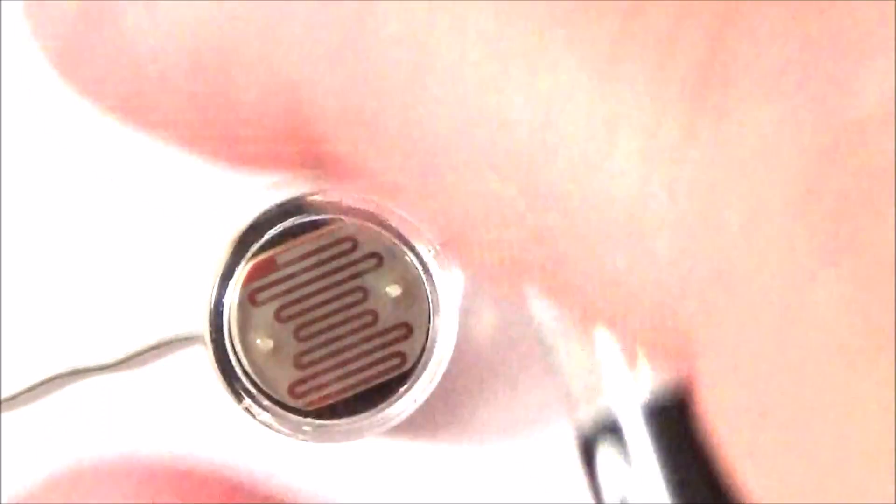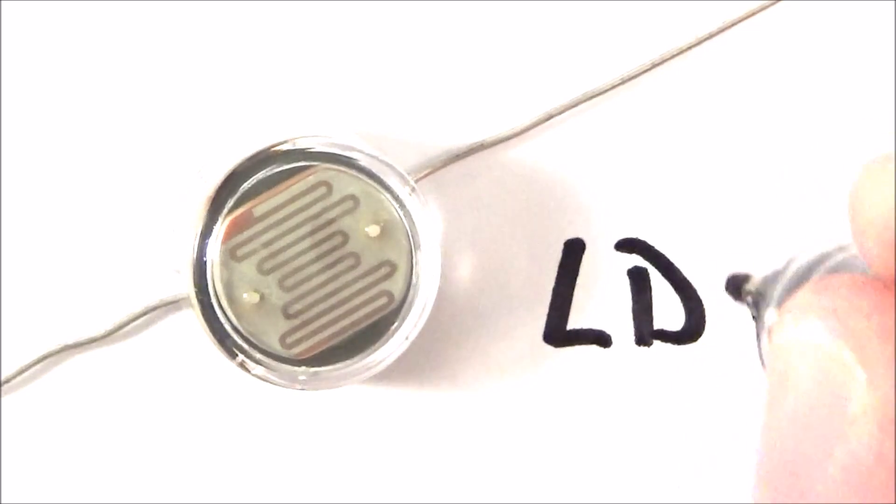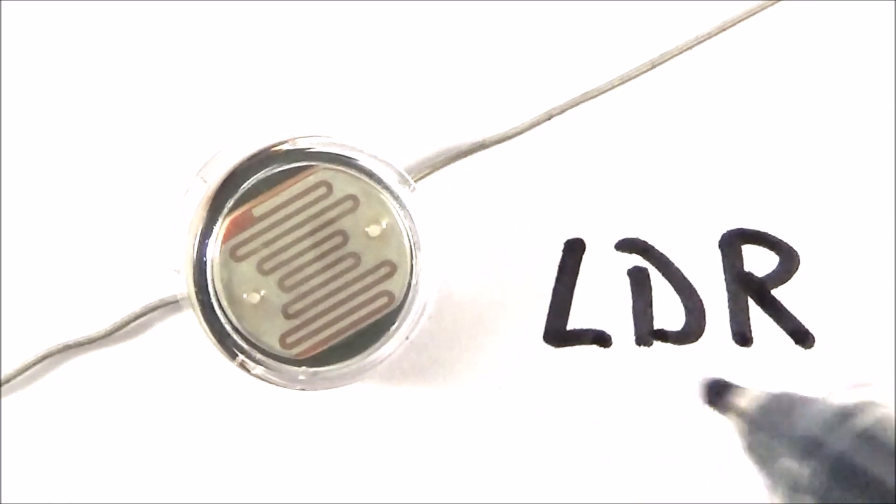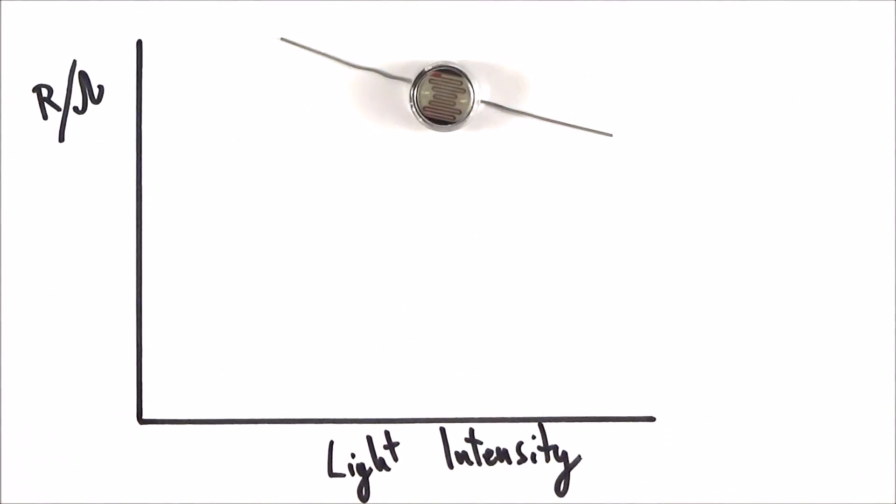This material becomes more conductive when photons of light are landing on top of it. And this thing here is what we call an LDR, which is a light dependent resistor. This LDR will change its resistance as we shine more light on it.